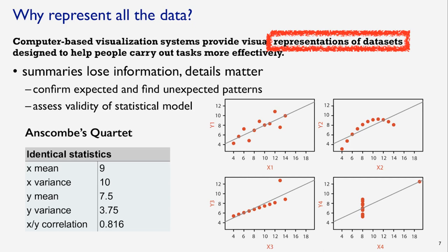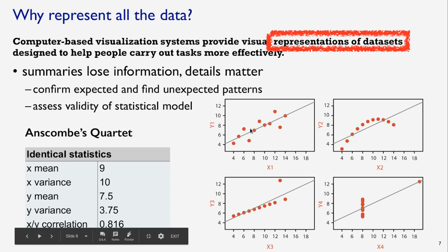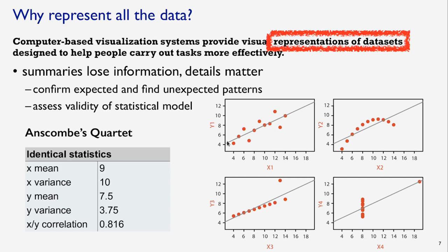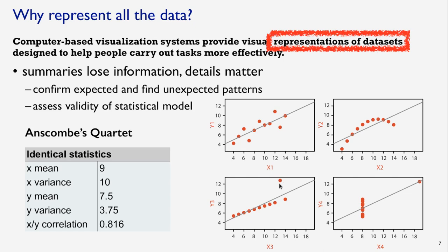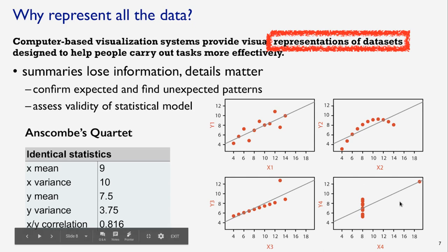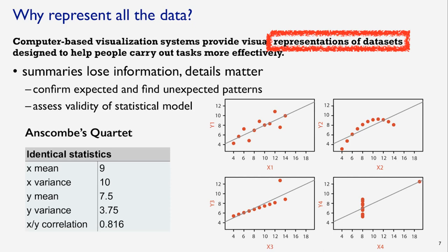Each of these four plots, if you compute statistical summaries, has identical mean, variance, and correlation. But shown visually, you can see they're very different. The first is a noisy spread of data that is more or less correlated. The second follows a totally different curve than what the model uses — something you don't see in the summary statistics at all. The third is a totally straight line with one outlier — outliers really pop out in visualizations but can be lost in statistical summaries. The fourth is a similar case: a straight line with one outlier skewing all the summaries. That's Anscombe's Quartet — a good demonstration of why you'd want to represent all the data visually.